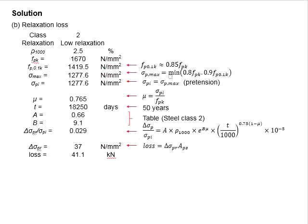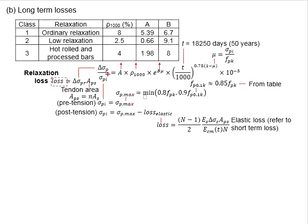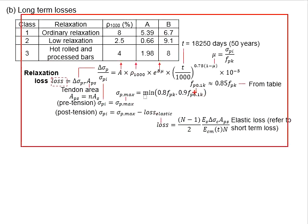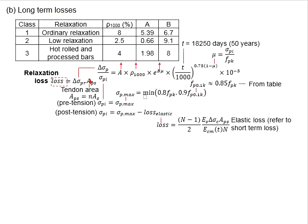Next, you need to calculate for the relaxation of the steel, which can be determined from the equation here. The A_ps here represents the tendon area, and you will need to determine the delta_sigma_pr, which is from this equation.